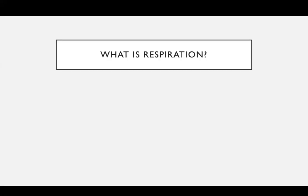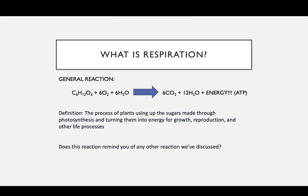Today I'm going to be going over a little bit about respiration just as a review. So what is respiration? It's the process of plants using up the sugars made through photosynthesis and turning them into energy for growth, reproduction, and other life processes. All of those sugars accumulated through photosynthesis have to be converted into ATP or energy for the plant to use. Here is the general reaction that happens in respiration, which is taking glucose C6H12O6 and oxygen and water, and through respiration converting that to carbon dioxide, more water, and energy that can be used by the plant.